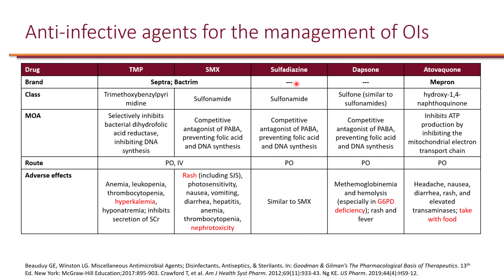We also have sulfadiazine, which is also a sulfonamide and very similar to sulfamethoxazole. And dapsone, which is similar to sulfonamides. Dapsone can cause methemoglobinemia and hemolysis, especially in patients with glucose-6-phosphate dehydrogenase (G6PD) deficiency. It is recommended to test patients for G6PD deficiency, and if they have that deficiency, it is best to avoid dapsone.